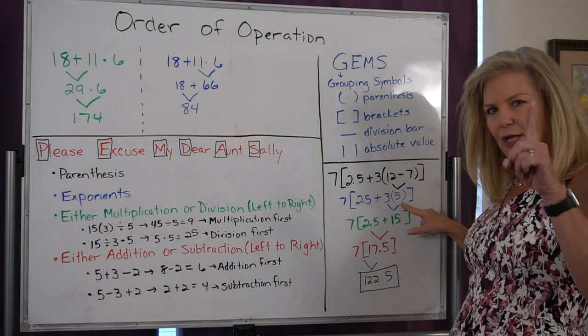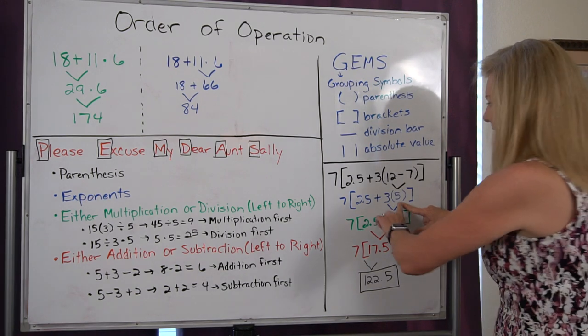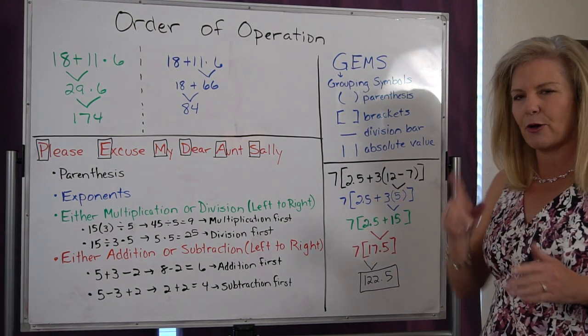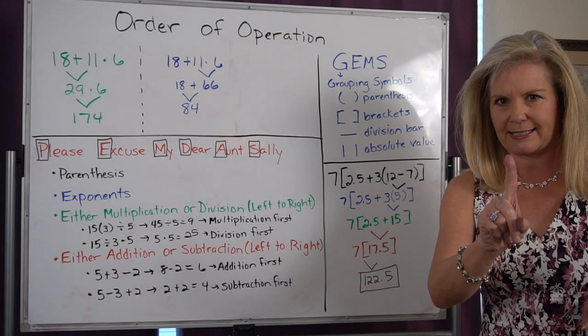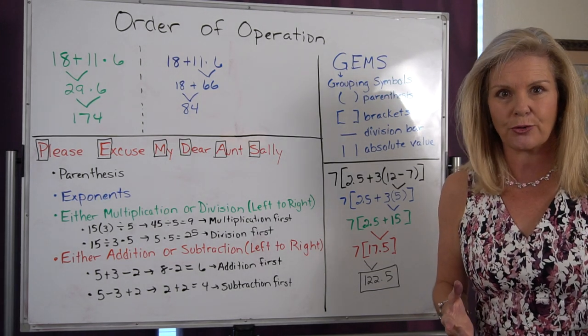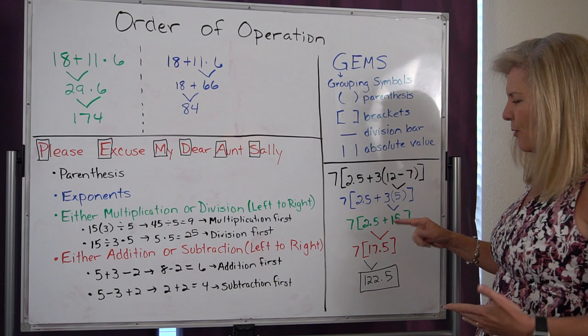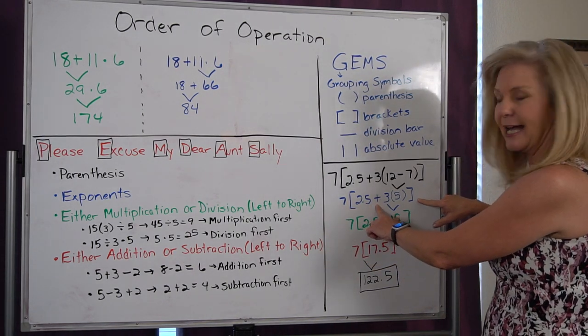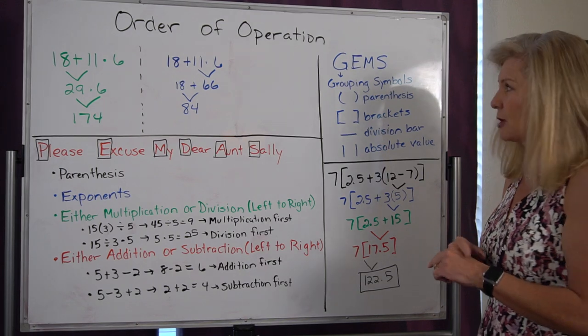Now, notice I only solve one thing per line. I keep everything else the same. And I always use an arrow pointing to the one thing that I solve. And that's what I would like you guys to do. So now I'm still inside my brackets, but I have an addition and multiplication.